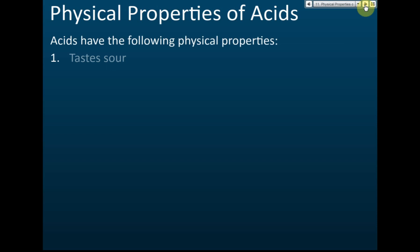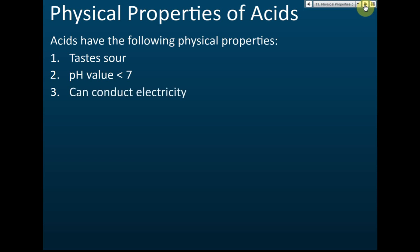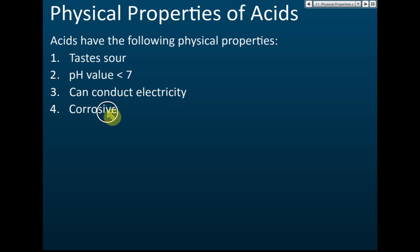Now for physical properties of acids — you need to memorize these. First, all acids have a sour taste. Second, the pH value is less than seven — seven is neutral and less than seven is acidic. Third, acids can conduct electricity. Fourth, acids are corrosive. Remember these properties because in exams, especially objective questions, they may list several properties and ask which ones belong to acids: sour taste, pH less than seven, conducts electricity, and corrosive.